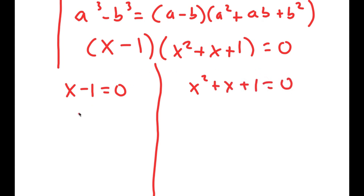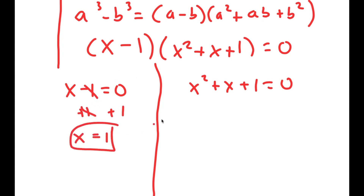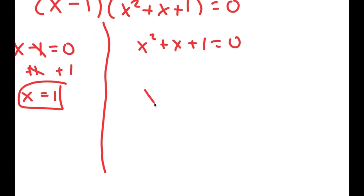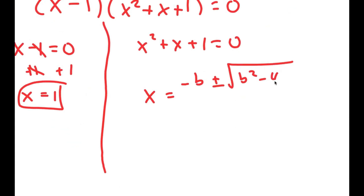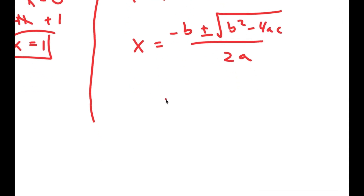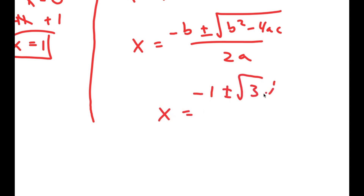For x minus 1 equals 0, all I have to do is add 1 on both sides and I get x is equal to 1. For x squared plus x plus 1 equals 0, I can use the quadratic formula. By using it I get x is equal to negative 1 plus or minus the square root of 3i, over 2. So these are two more solutions.